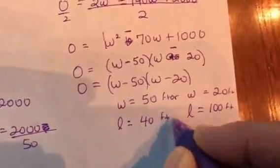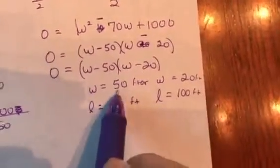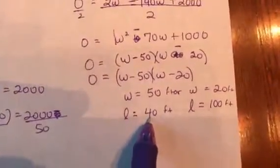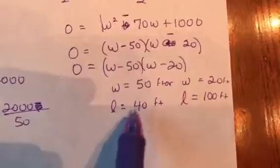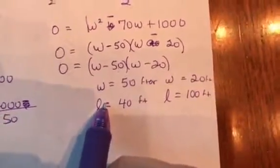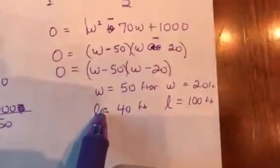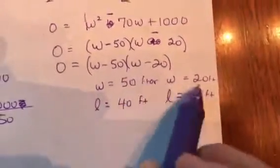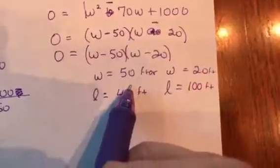So either one of these dimensions would work. You might think this one's a little weird because your width is longer than your length. It doesn't really matter. We usually let length represent our longest area, but it still works. Everything works. The math works. It all makes sense. So both of these are possible dimensions for my pen. And there you go.